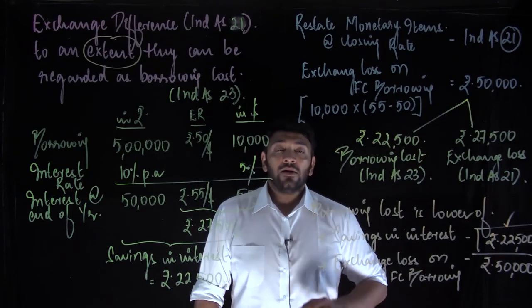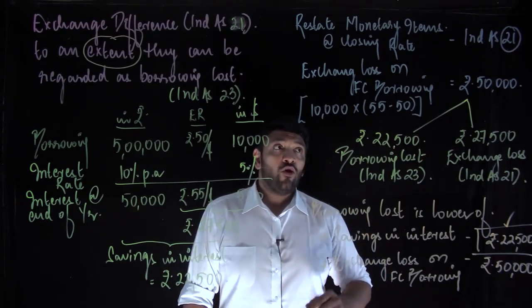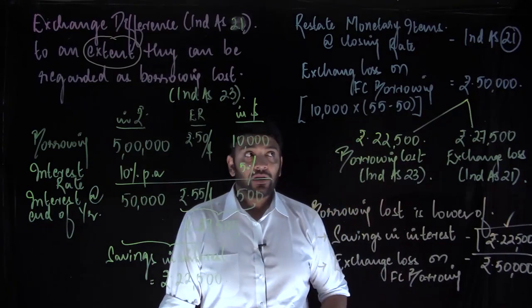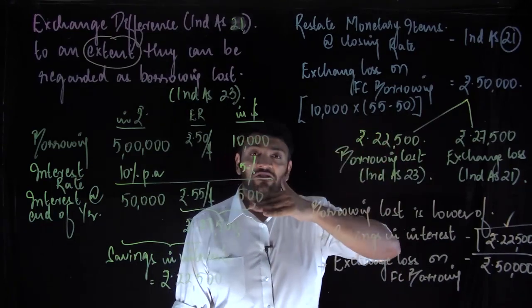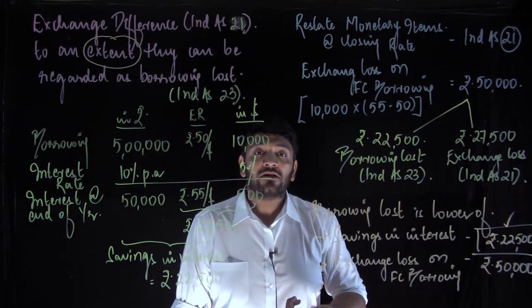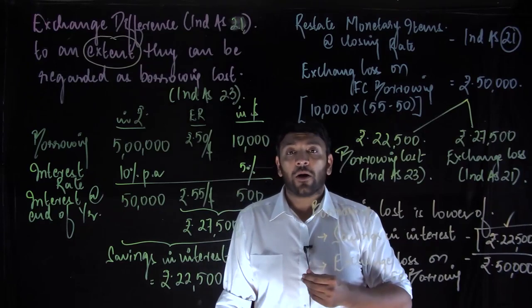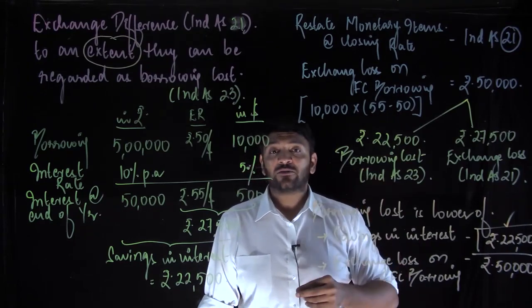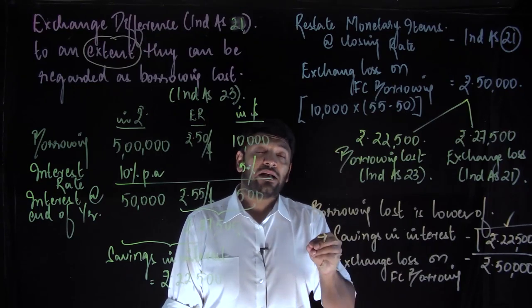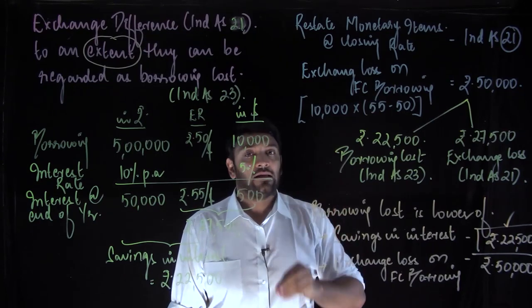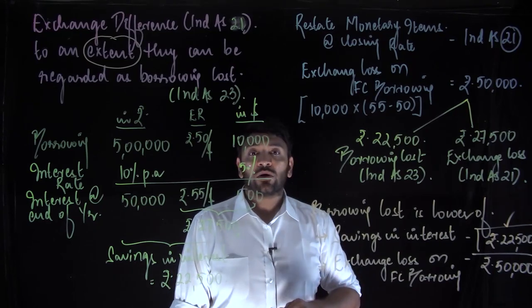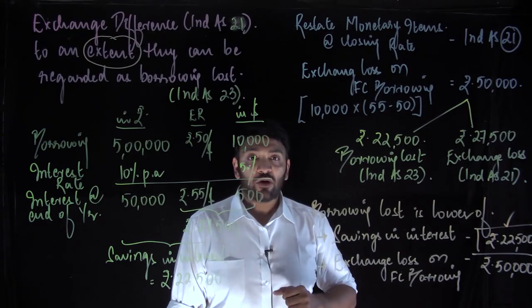Now, what will happen if subsequently there is an exchange gain? In a subsequent year, if the dollar rate comes down to 53 from 55, there is a saving of 2 rupees per dollar. My liability, which was 5,50,000 last time, has now come down to 5,30,000, giving a gain of 20,000 rupees.